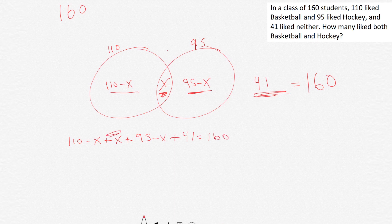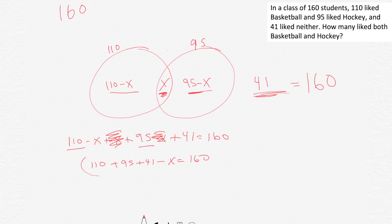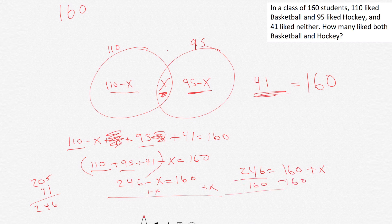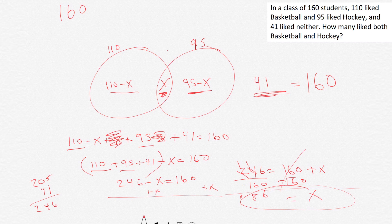The positive X and negative X cancel out, leaving 110 plus 95 plus 41 minus X equals 160. That simplifies to 246 minus X equals 160. Rearranging: 246 equals 160 plus X, so X equals 86. Same answer — 86 people like both.